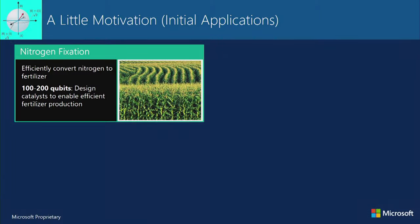Why do we want to use quantum computing for anything? Our current estimates are that 1 to 200 qubits are all that's needed to design a catalyst for efficient fertilizer production. Five percent of the world's natural gas every year is used to make fertilizer — 3% of total energy output. We know we can do better because plants do this via anaerobic bacteria in their roots at atmospheric pressure and temperature with very low energy.